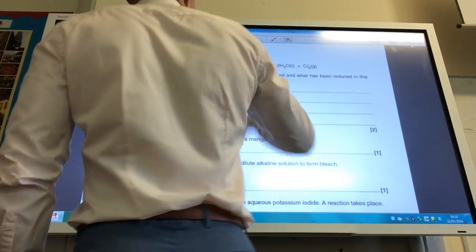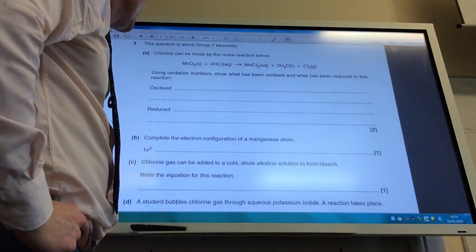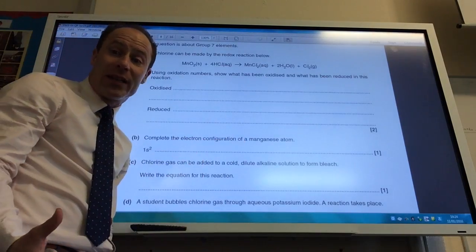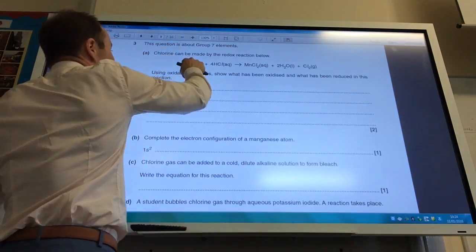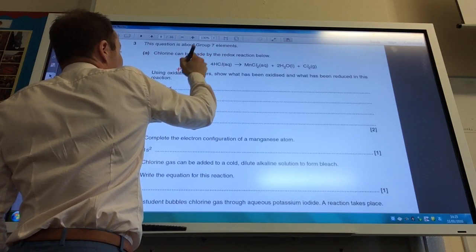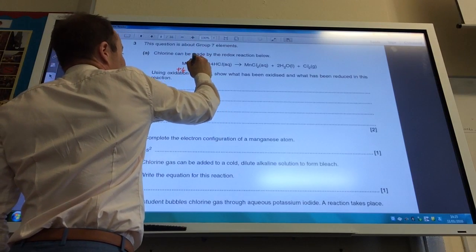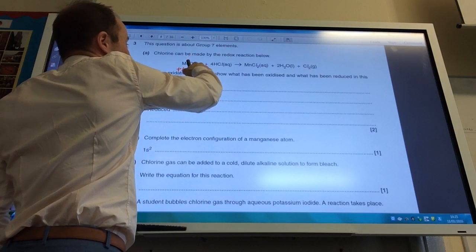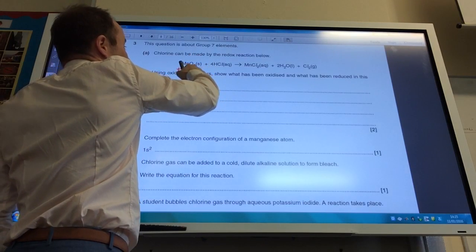Chlorine can be made by that redox reaction as shown. Using oxidation numbers to show what has been oxidised, what has been reduced. So let's go for all the oxidation numbers here. Manganese, that is going to be +4. Why? Well, oxygen is, as you know, always -2. I've got 2 of them, which adds up to -4, so manganese is going to be +4.